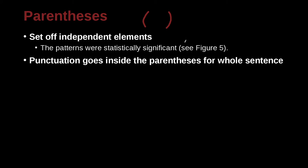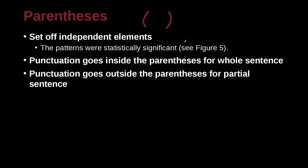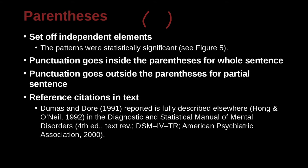When you use punctuation, it goes inside the parentheses for whole sentences. And punctuation goes outside parentheses for partial sentences. Also, you use parentheses in reference citations that are inside your text. So for example, let's take a look here. Dumas and Dore, and here we have the date. So this is separate and a part of a citation. So we use parentheses. Reported is fully described elsewhere, Hong and O'Neill, 1992, because this is a citation. In the Diagnostic and Statistical Manual of Mental Disorders, and then here we're going to have the specification of what we're addressing.